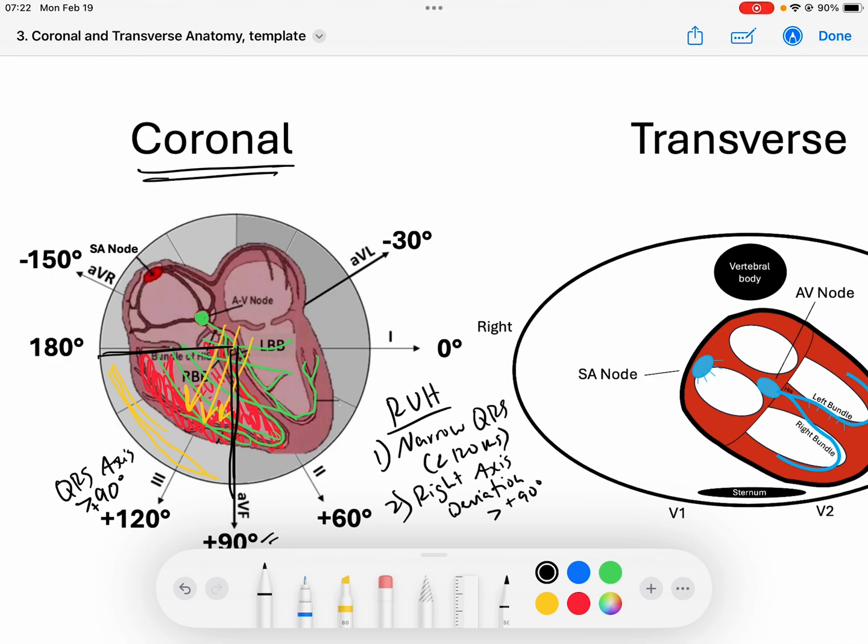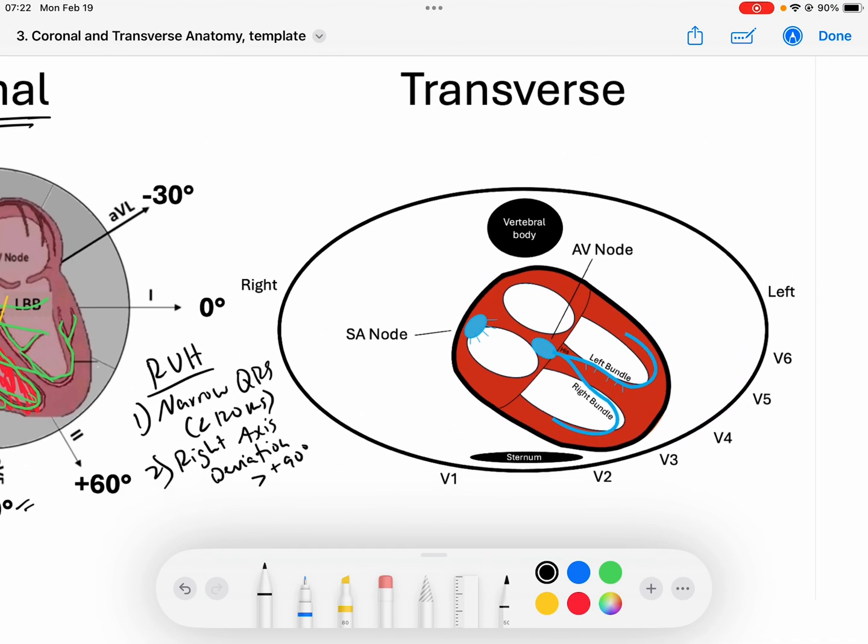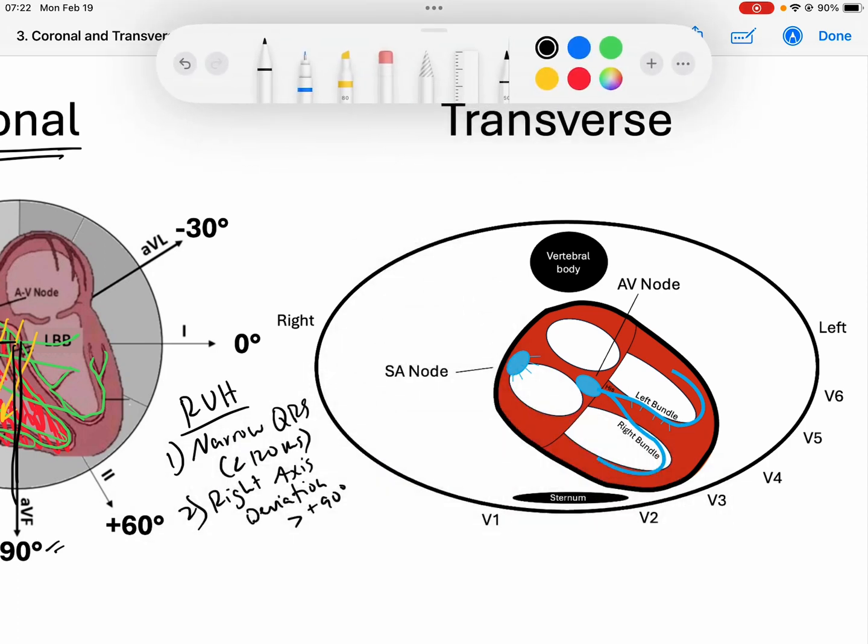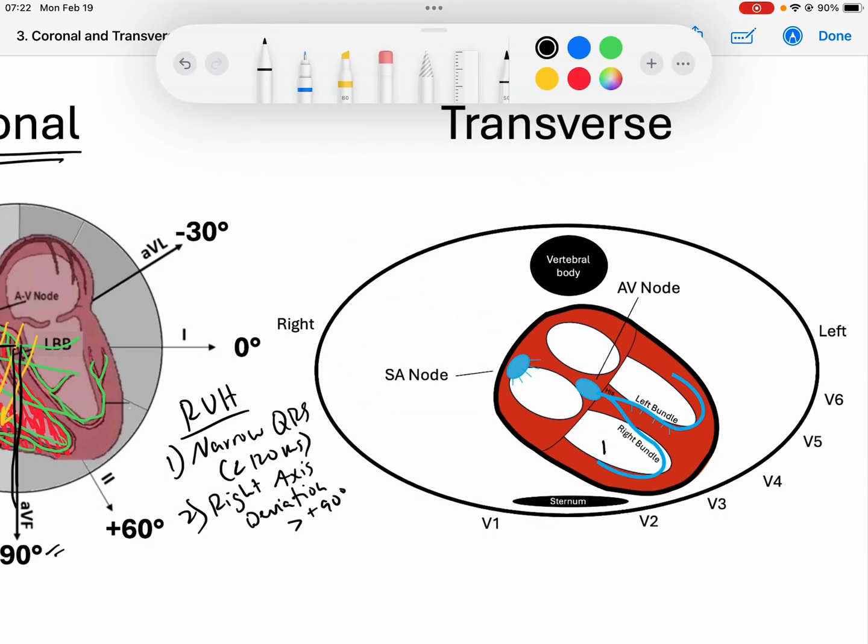Let's come over to our transverse view and get the rest of this criteria dialed in. Remember that the right ventricle sits right here, the left ventricle sits right here. I'm going to draw in red - this right ventricle is just strong, it's really strong, it's got a lot of hypertrophy going on.